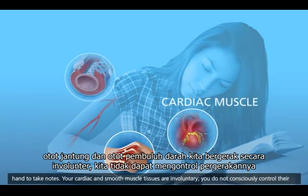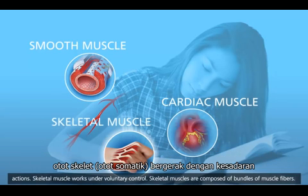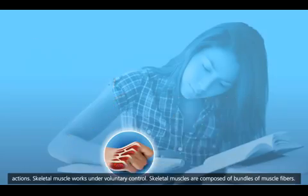Your cardiac and smooth muscle tissues are involuntary — you do not consciously control their actions. Skeletal muscle, however, works under voluntary control.